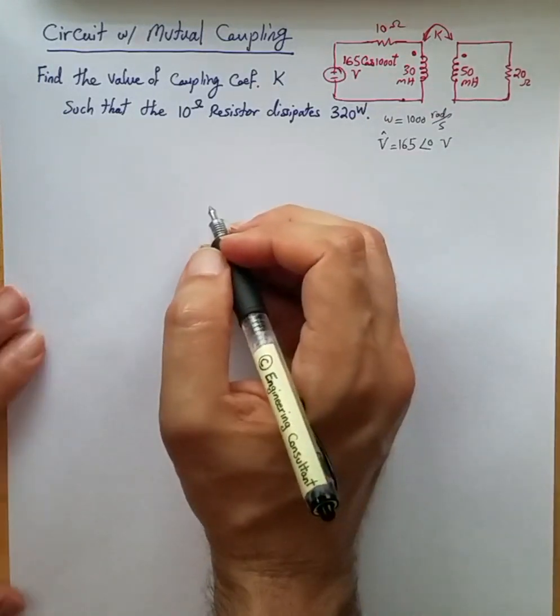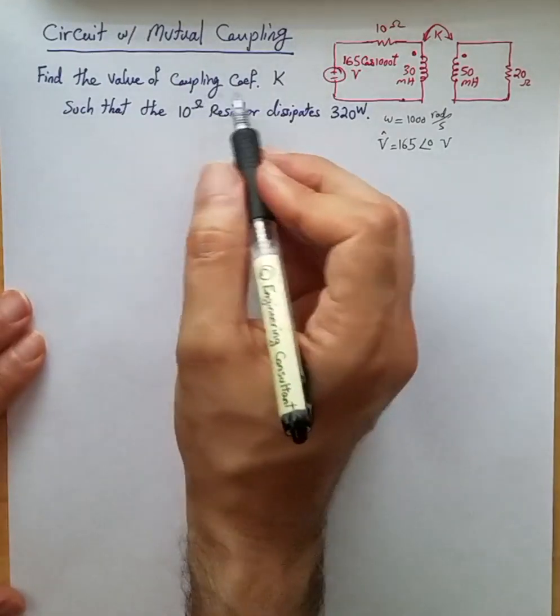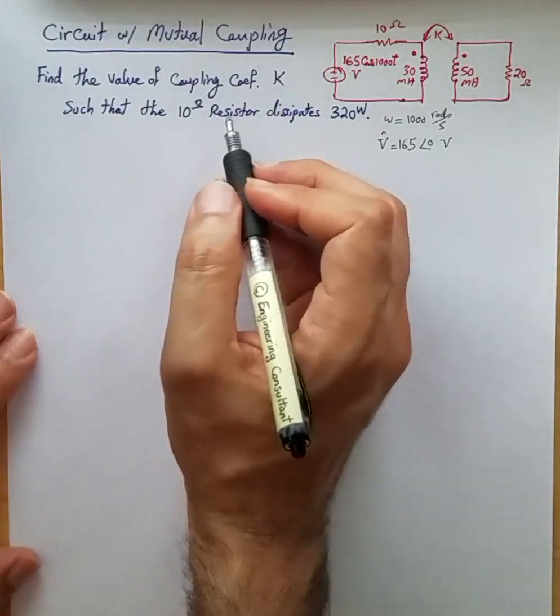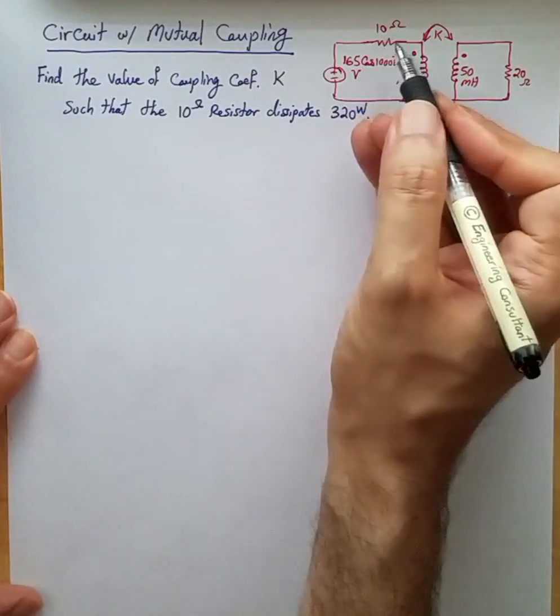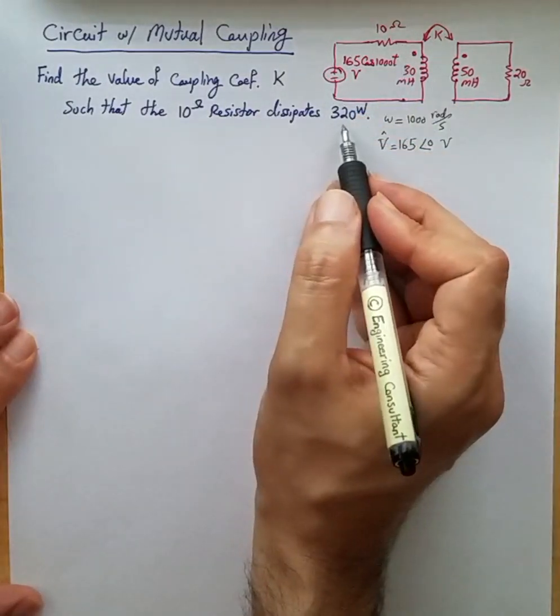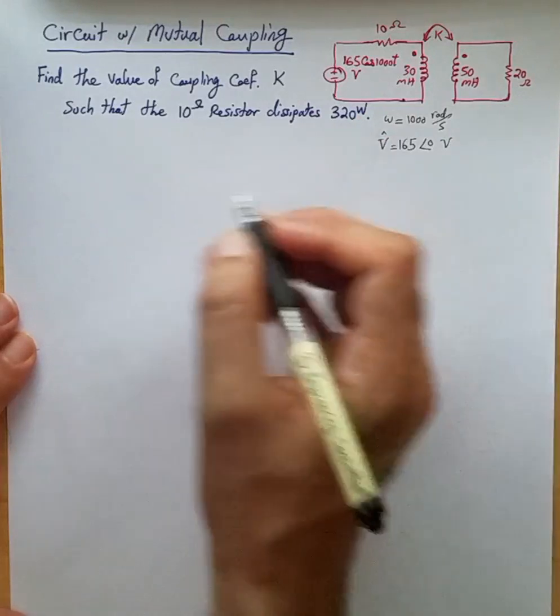The question is we need to find the coupling coefficient k such that in the resulting circuit, the 10 ohm resistor is going to dissipate 320 watt active power, average active power.